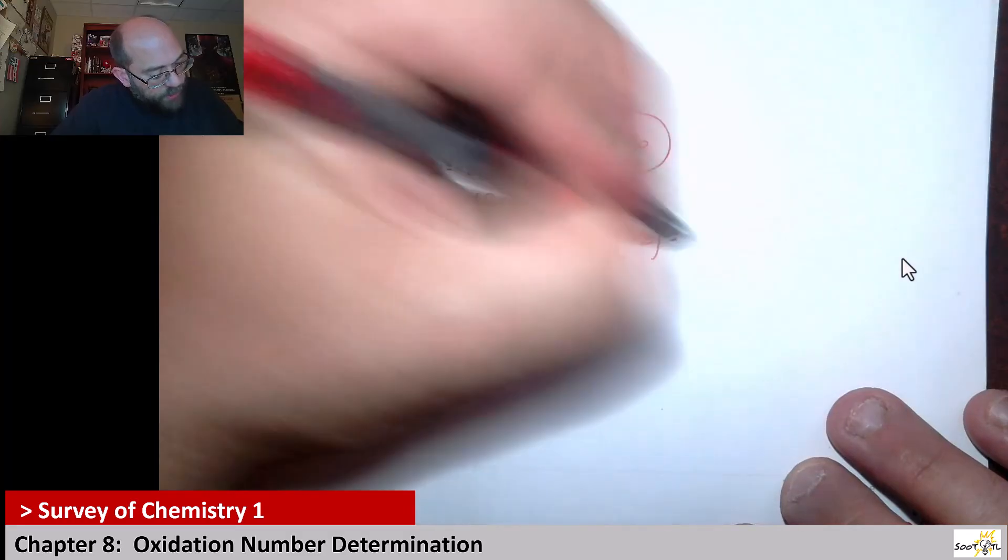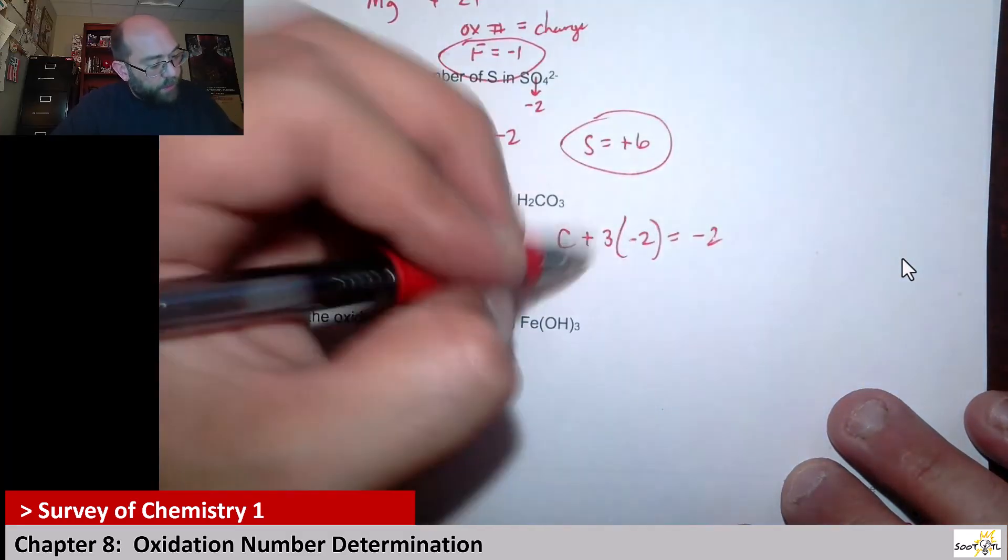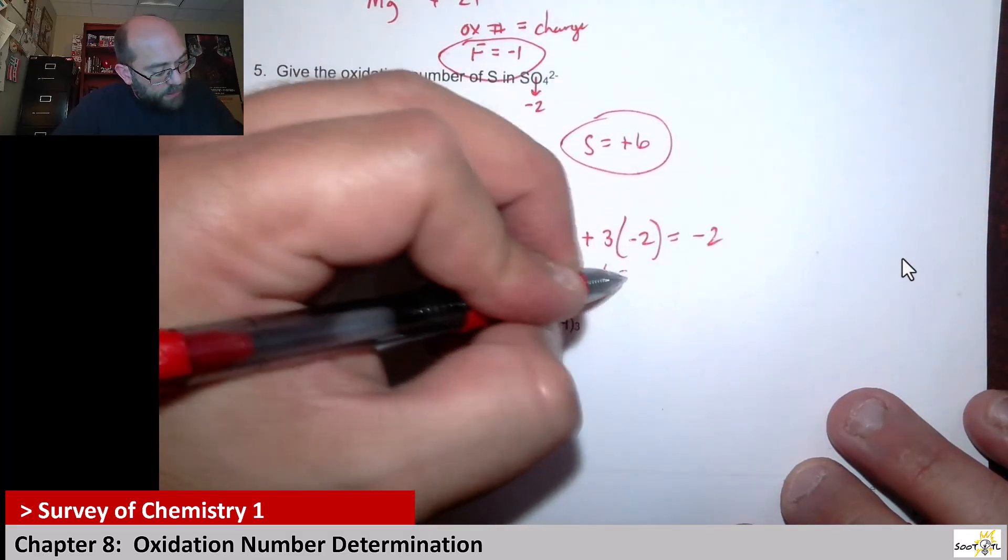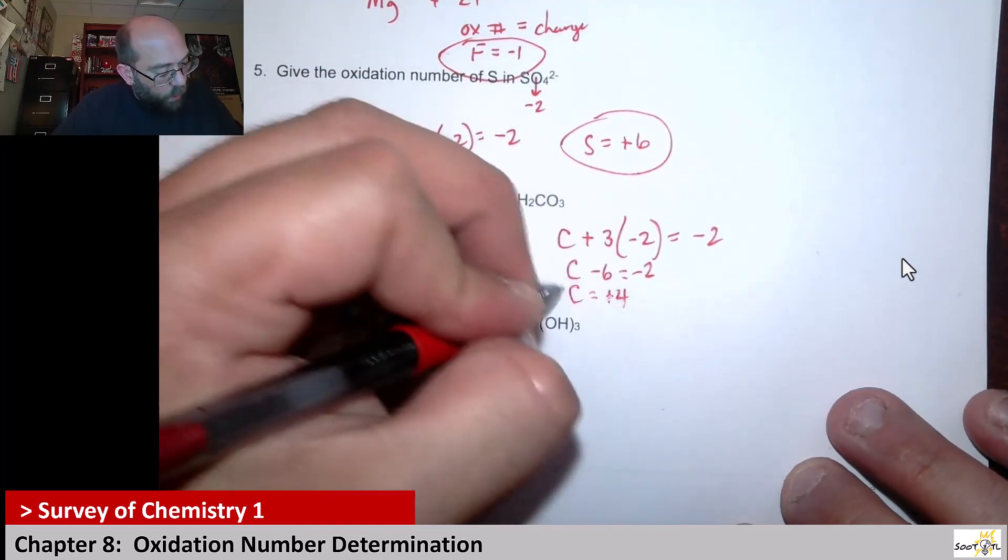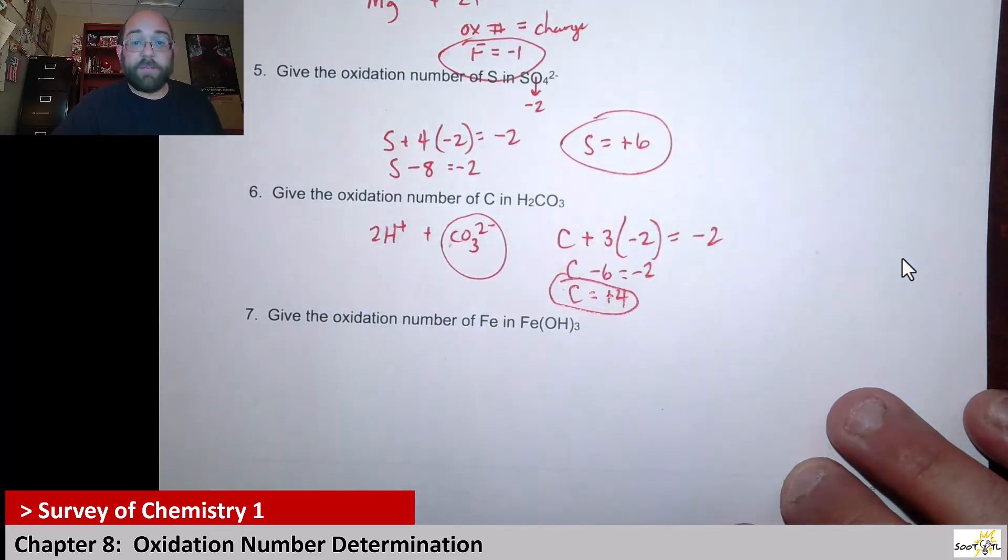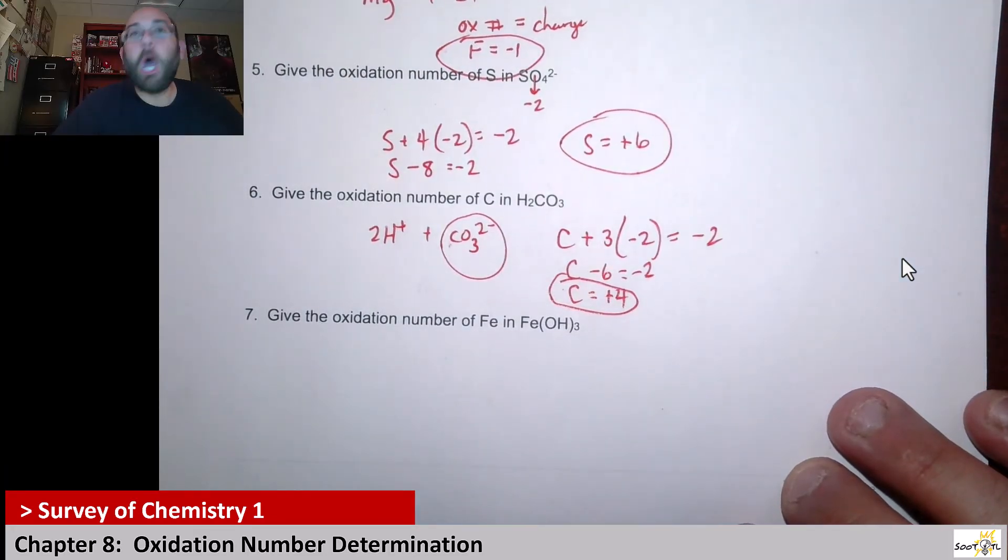So all of that should equal to -2. That means carbon - 6 = -2. Therefore, carbon equals positive four. So that would be the oxidation state of carbon in carbonic acid.